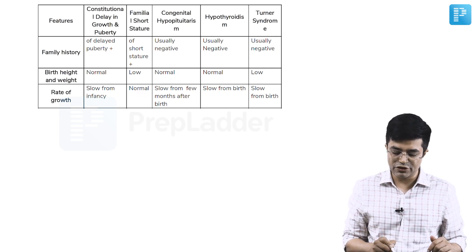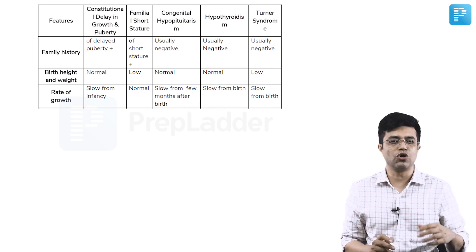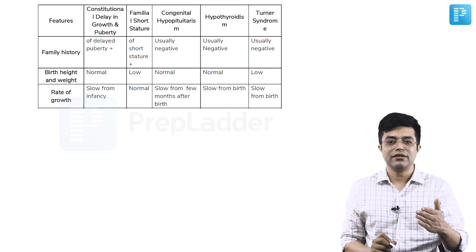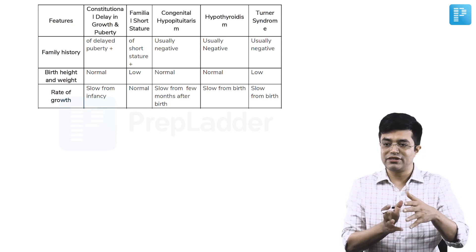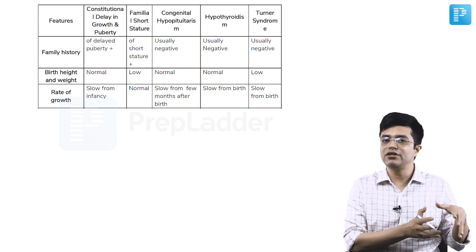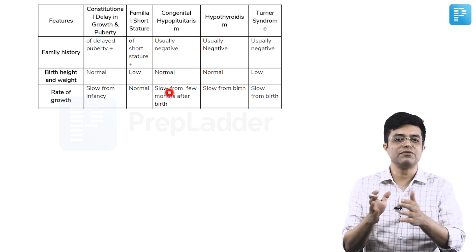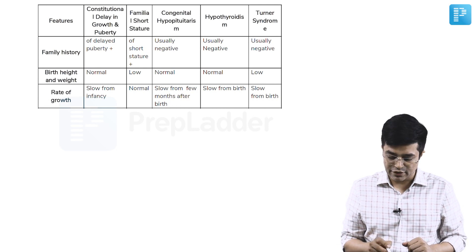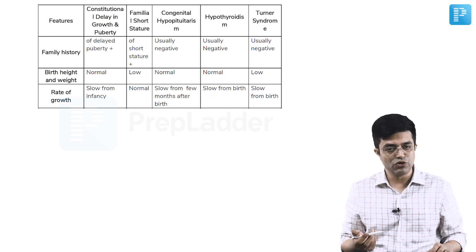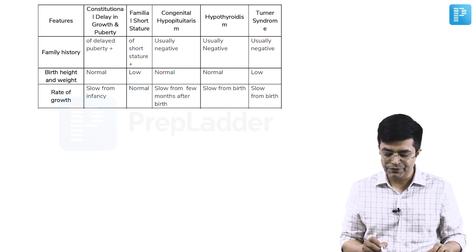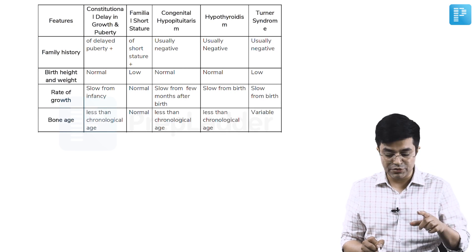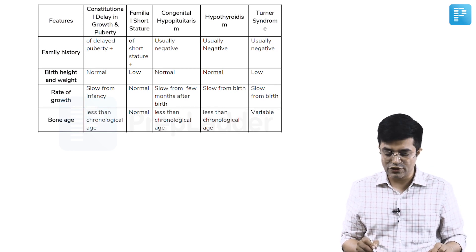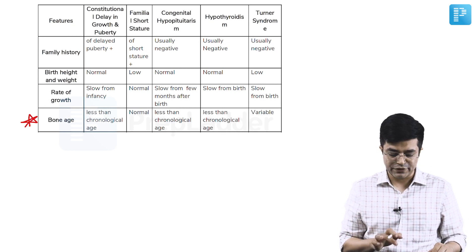Familial short-stature will have a normal growth velocity, but because their starting point is low, they will always be below the third centile curve. Congenital hypopituitarism is slow from a few months after birth. Hypothyroidism will be slow from birth, and Turner syndrome again will be slow from birth.